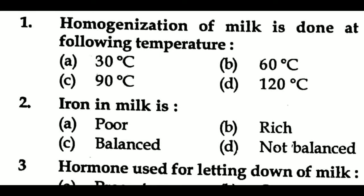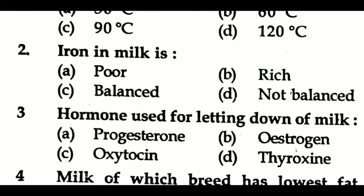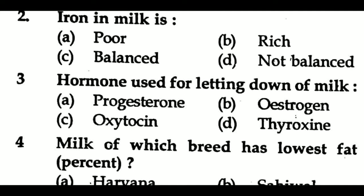Question 1: Homogenization of milk is done at which temperature? Option A: 30°C, Option B: 60°C, Option C: 90°C, Option D: 120°C. Question 2: Iron in milk is — Option A: poor, Option B: rich, Option C: balanced, Option D: not balanced. Question 3: Hormone used for letting down of milk is — Option A: progesterone, Option B: estrogen, Option C: oxytocin, Option D: thyroxine.